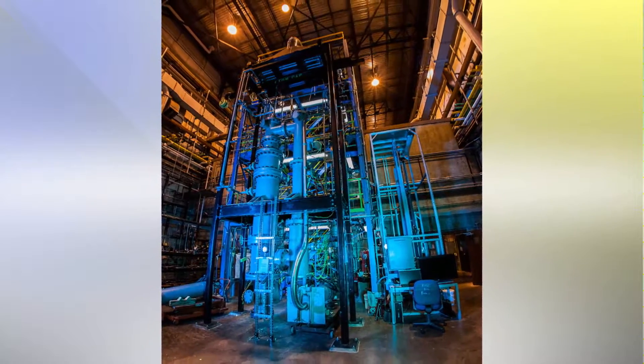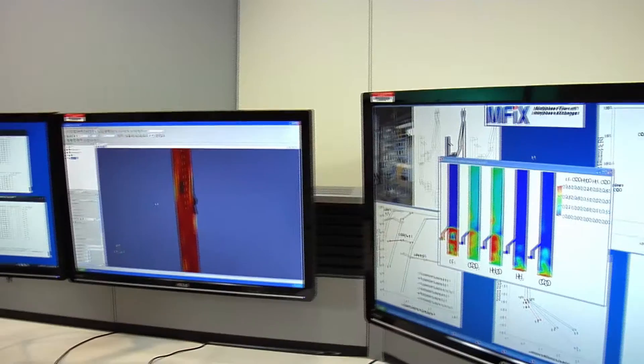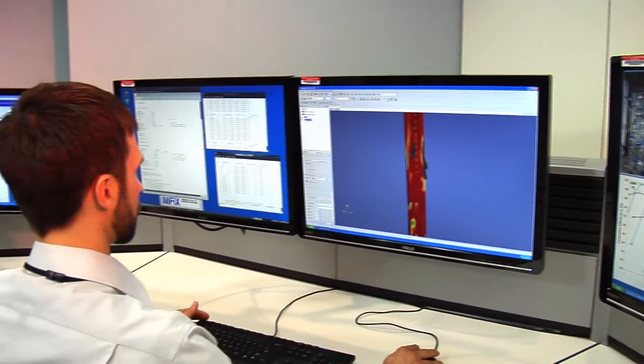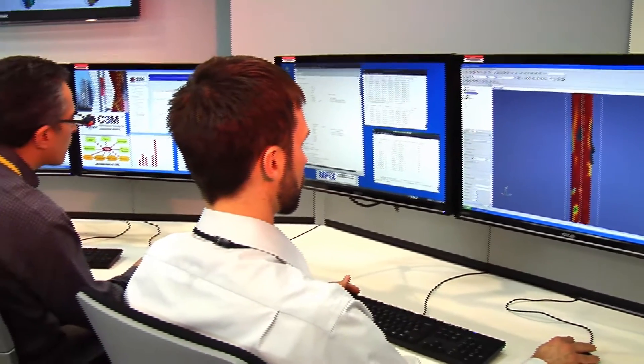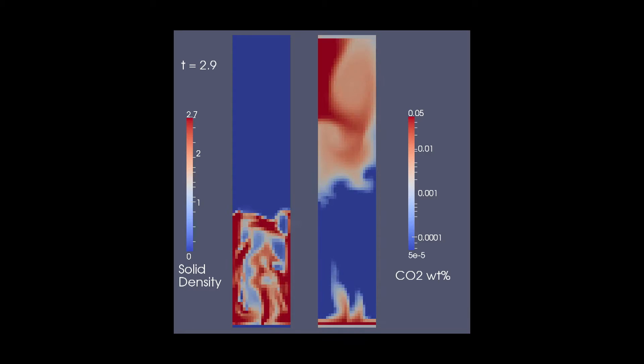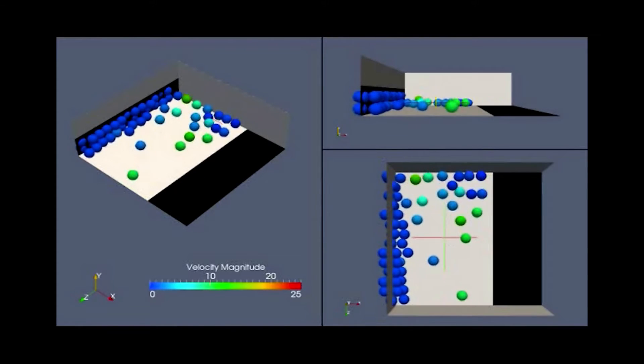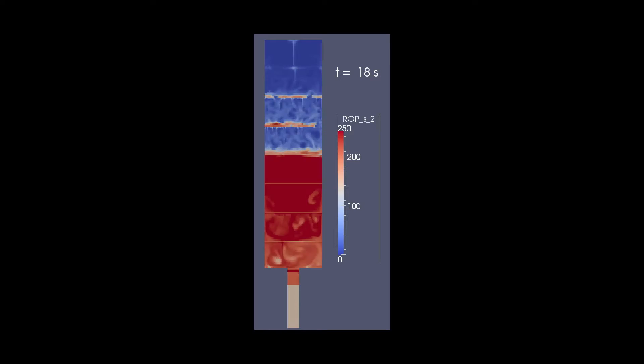NETL's chemical looping reactor was designed to be large enough to provide operational and performance data to validate computational fluid dynamics models. These models provide tools that can be used to investigate different reactor configurations without building new experimental units. In addition, these modeling tools can accelerate scale up from laboratory sized units to industrial sized units much faster than the historical 20 to 25 year period for new technologies.